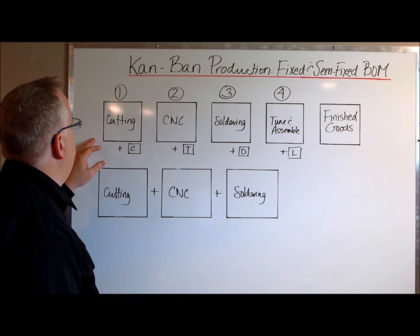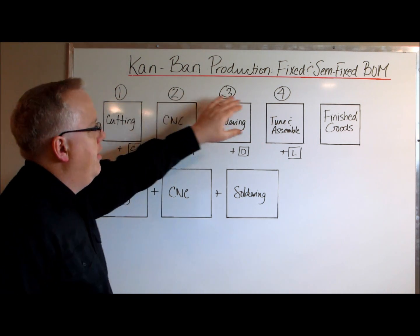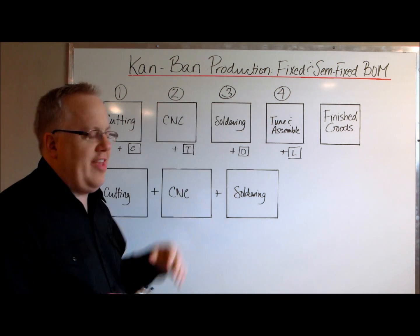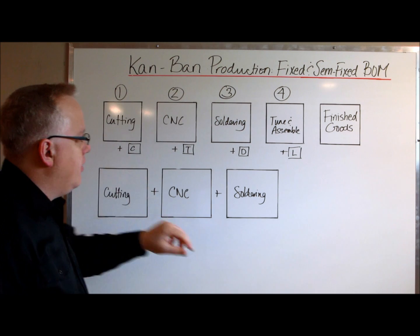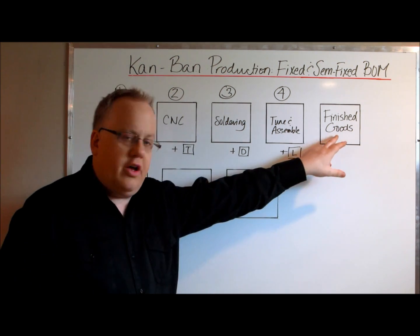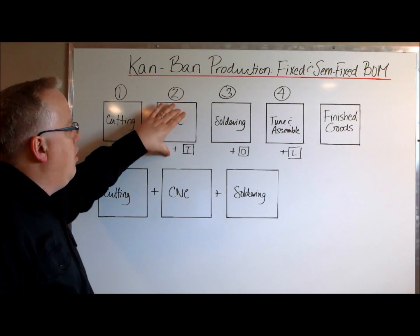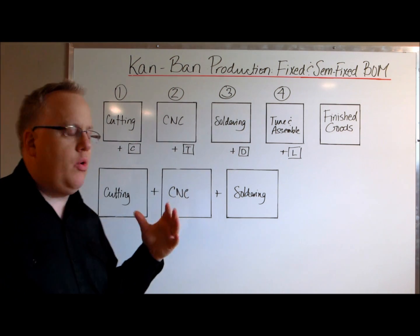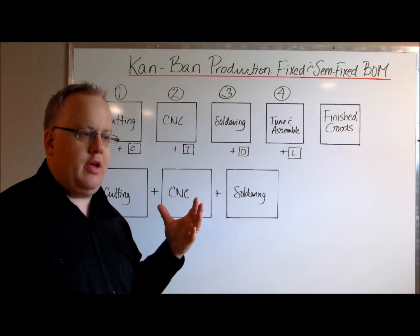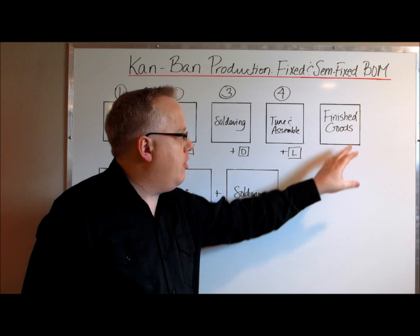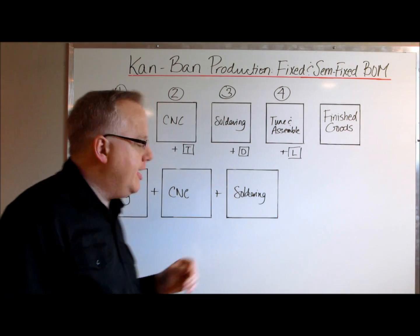Let's take a look at the first scenario. What I've done here is outlined four example operations that might be included in turning a raw material into an industrial finished good. We're going to go over these four operations and then I'm going to show you how the Kanban structure works from the finished goods backwards.